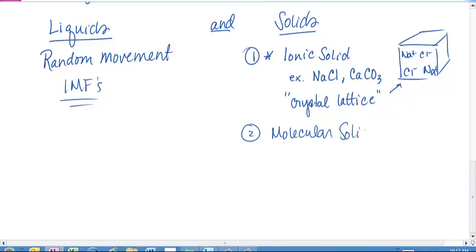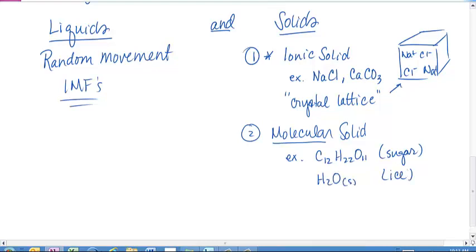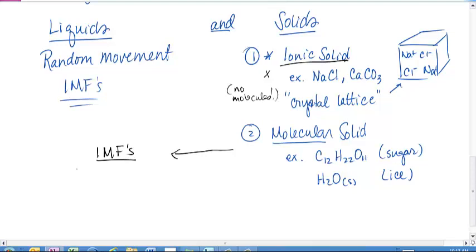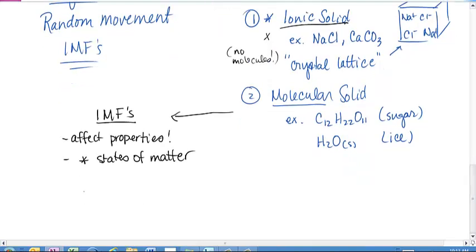Number two is a molecular solid — a solid made of molecules. Examples include C12H22O11 (sugar) and H2O solid (ice). In molecular solids, we have these intermolecular forces. Ionic solids do not have intermolecular forces because there are no molecules. But molecular solids do have intermolecular forces, and those forces affect their properties — for example, what state of matter you're likely to find them in: solid, liquid, or gas.